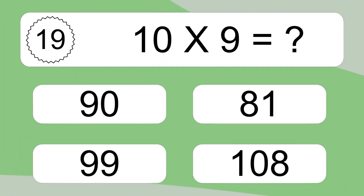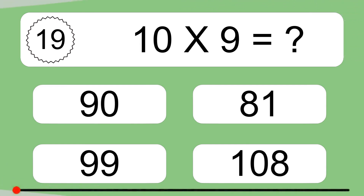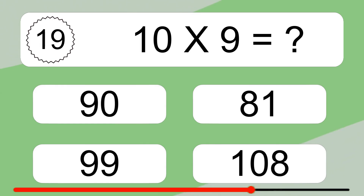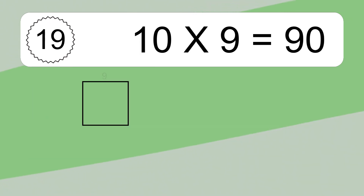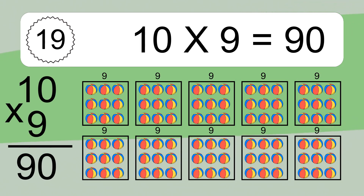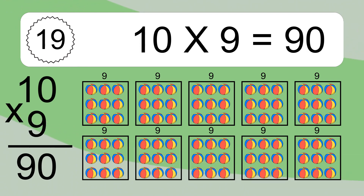10 times 9 equals what? 10 times 9 equals 90. We have 10 boxes, and each box has 9 colorful balls inside. If you count all the balls in all the boxes together, you will have 10 times 9 balls. This equals 90 balls.